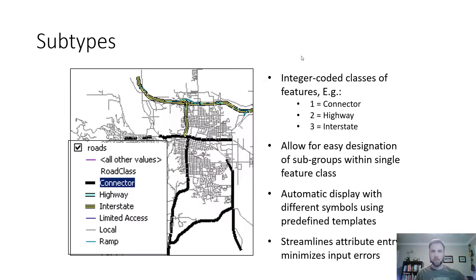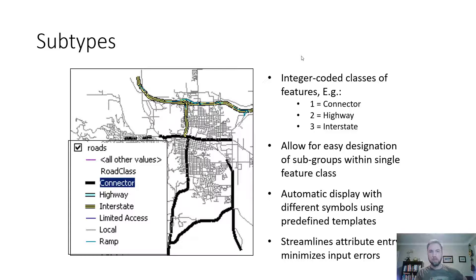Subtypes are coded types within a single feature class — integer-coded. In my example, the integers are one, two, and three: one represents a freeway connector, two represents a highway, and three represents an interstate. When creating a line network, in addition to a type attribute field, you can have a coded integer field — one, two, three — that allows you to easily symbolize each road type by integer value. So every connector becomes green, every highway black, and interstate yellow. It allows for easy designation of subgroups, automatic display with different symbols based on predefined integer templates, and streamlines attribute entry while minimizing input errors.